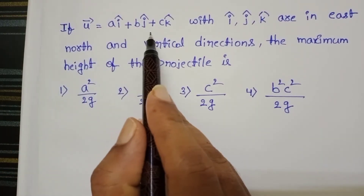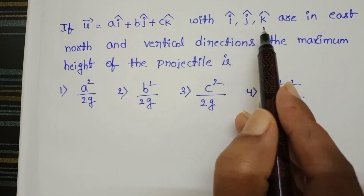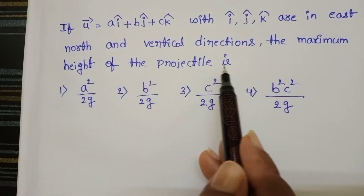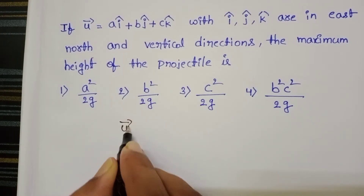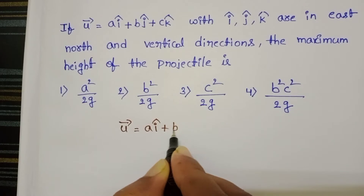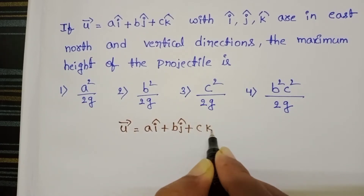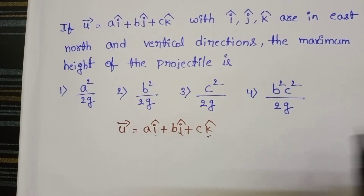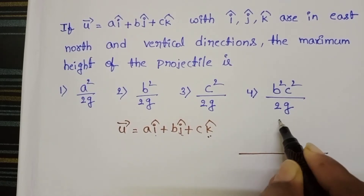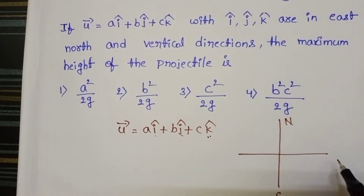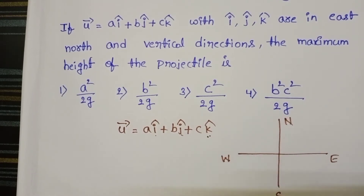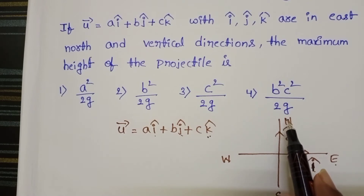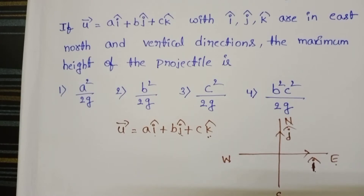If u bar is equal to a i cap plus b j cap plus c k cap, where i cap, j cap, k cap are unit vectors along east, north, and vertical directions respectively. Here i cap is a unit vector along east direction, j cap is a unit vector along north direction, and k cap is a unit vector along vertical direction.